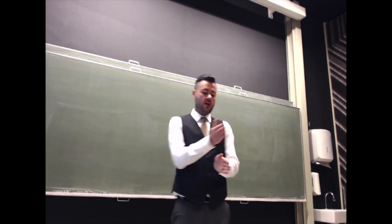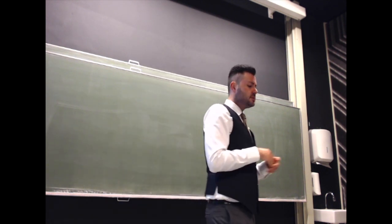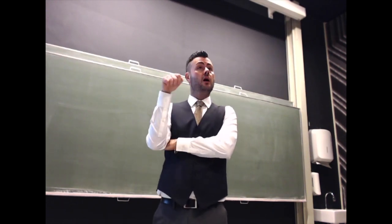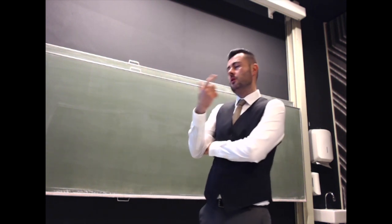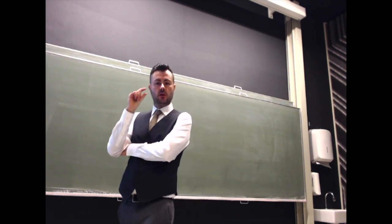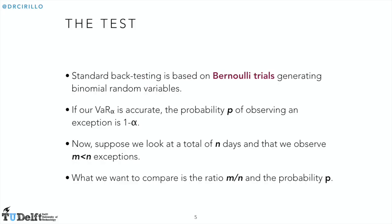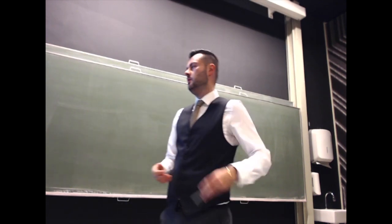Imagine that I have a certain number of days in my data set. I call this number N, and over these N days, I can count M exceptions. So I can build an estimator of the probability P, which is my theoretical probability, using the ratio M over N, and using this ratio I can build a test. If this ratio is close enough to P, I will not reject the VaR. If this ratio is far from P, I will reject the VaR.